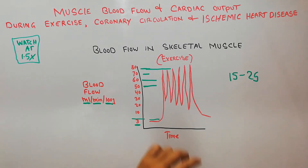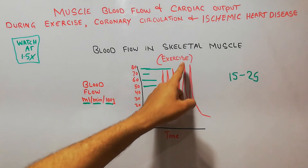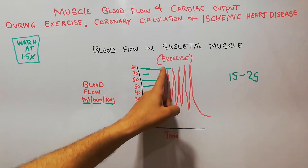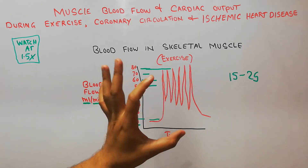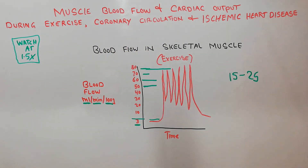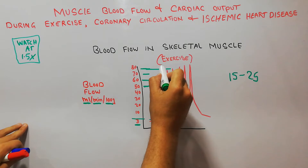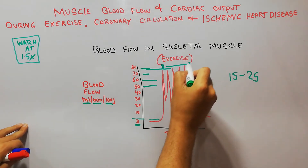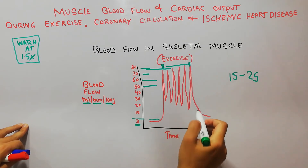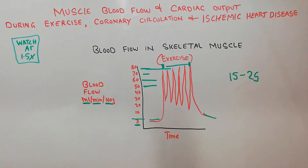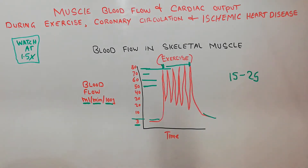In this graph we see that the blood flow during exercise is basically increasing and decreasing repeatedly. When the exercise is finished, the blood flow returns to normal. This oscillating pattern — increasing and decreasing — occurs throughout the exercise period.